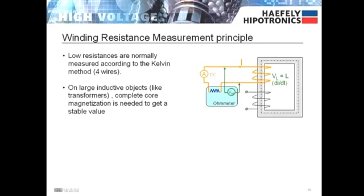The resistances are normally measured according to the Kelvin four wire method where two current leads and two voltage leads are used. A known current is introduced into the circuit and the voltage drop is measured. On large inductive objects like transformers, complete core magnetization is needed to get a stable value.